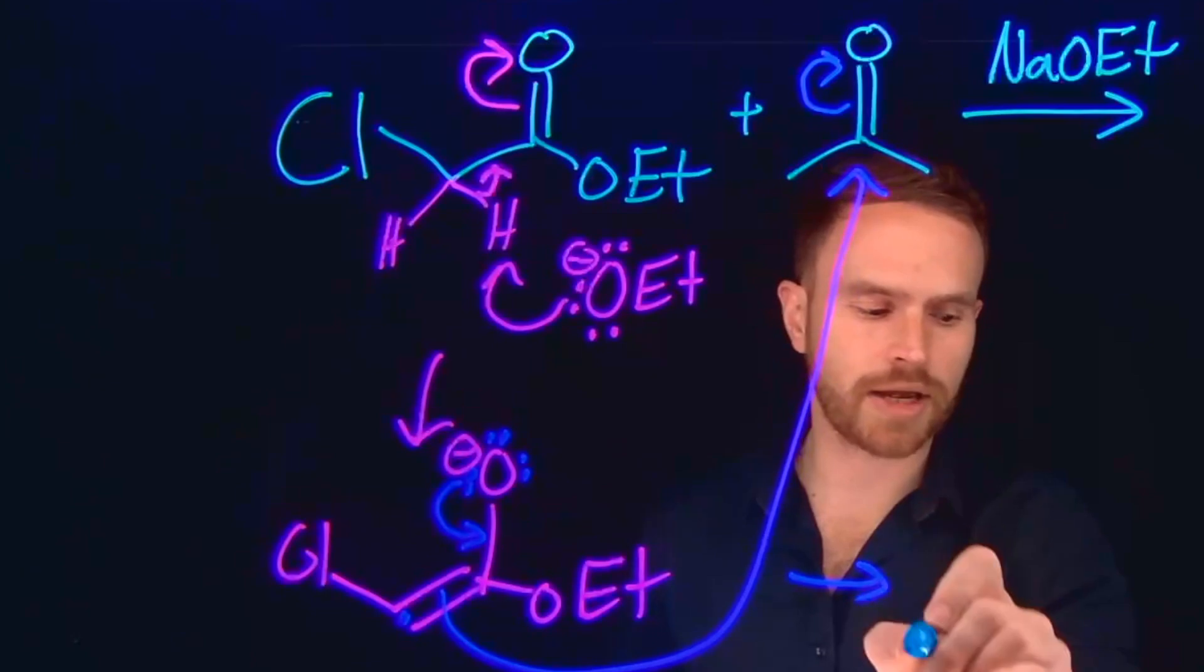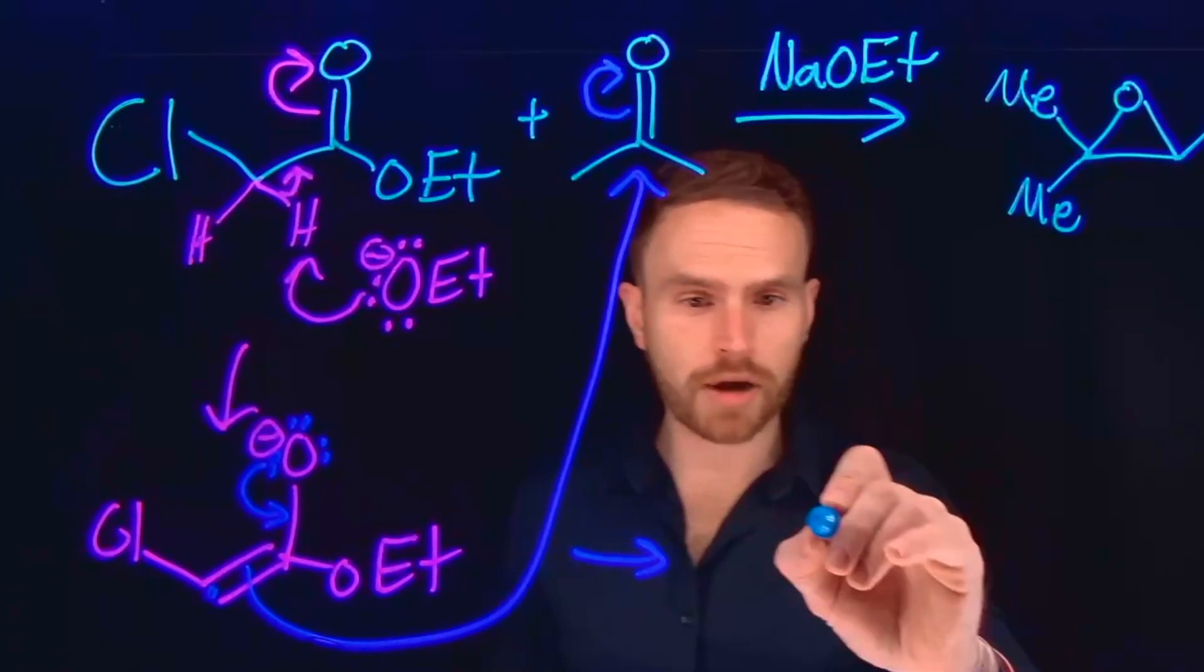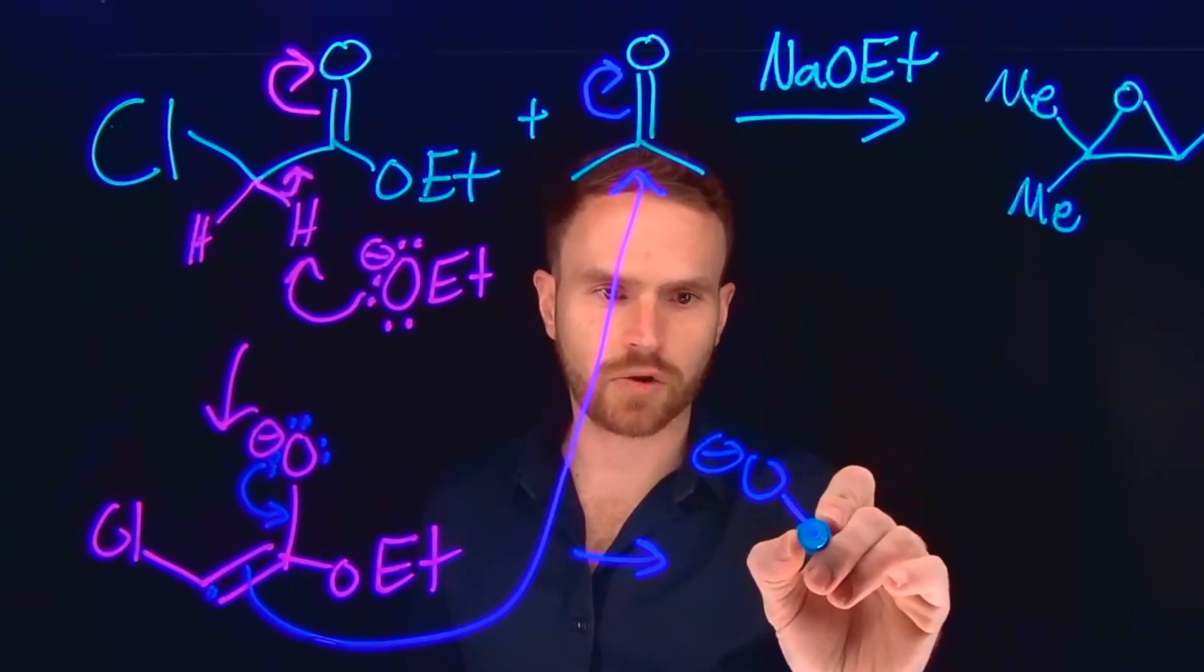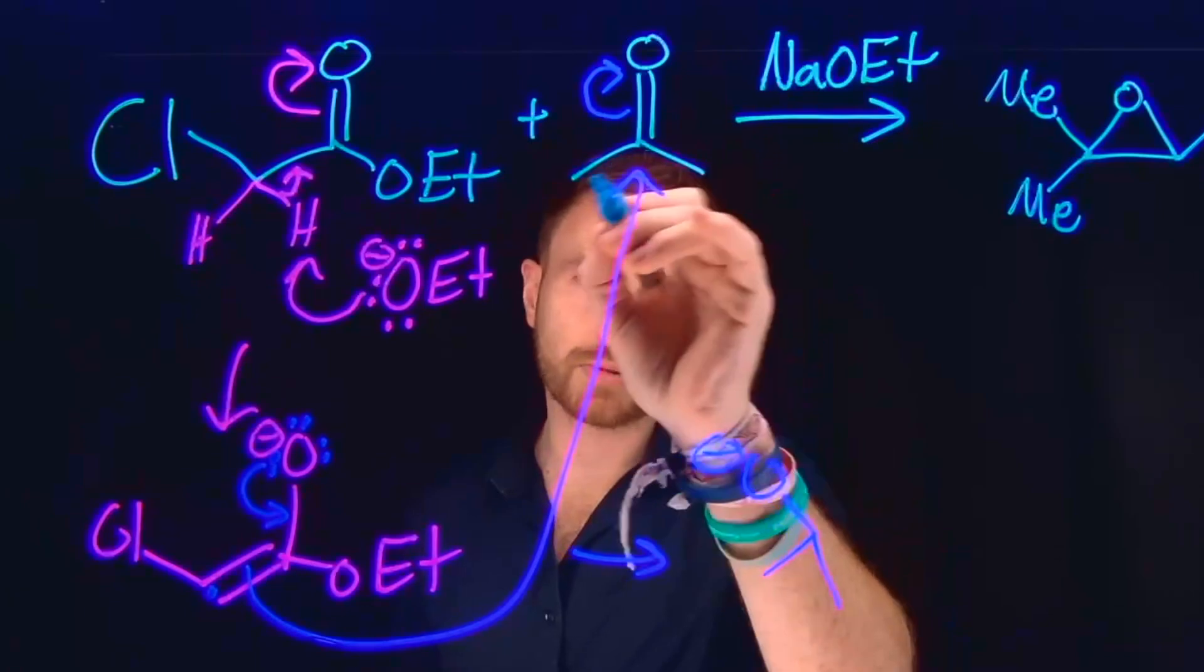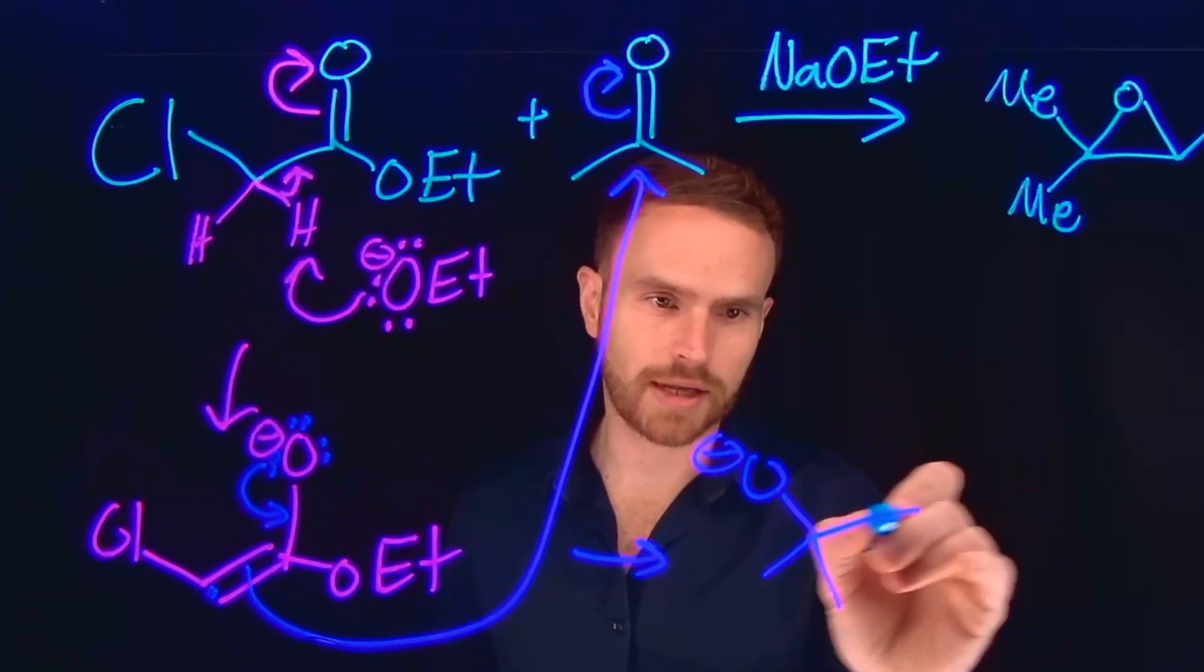This allows us to generate a product where we have a new carbon-carbon bond at this position. So the product of this transformation, now we're going to have a negatively charged oxygen from our original acetone molecule. The two methyl groups from acetone are located here, and our new carbon-carbon bond is located at this position.